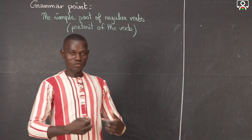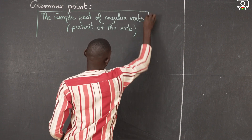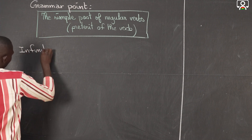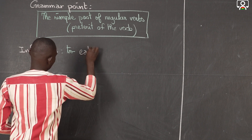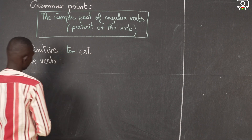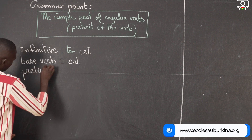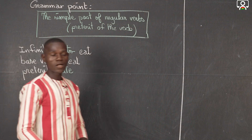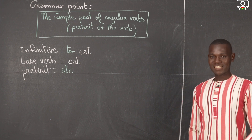The verb we are going to conjugate today as an example is TO EAT. Infinitive: eat. This verb is irregular. To eat is an irregular verb, and the preterite or simple past of eat is ate.